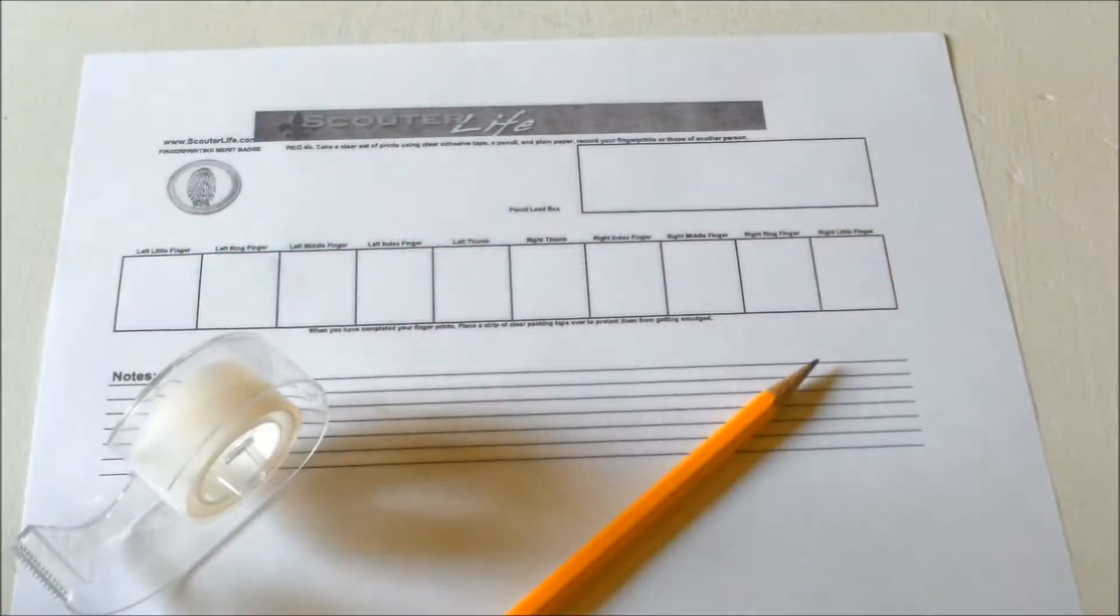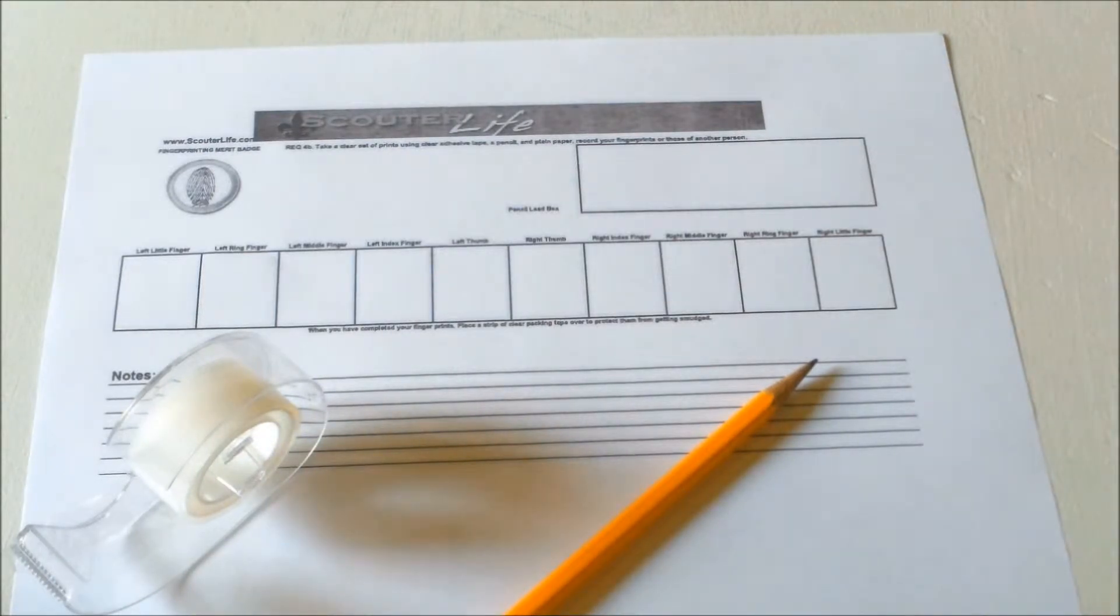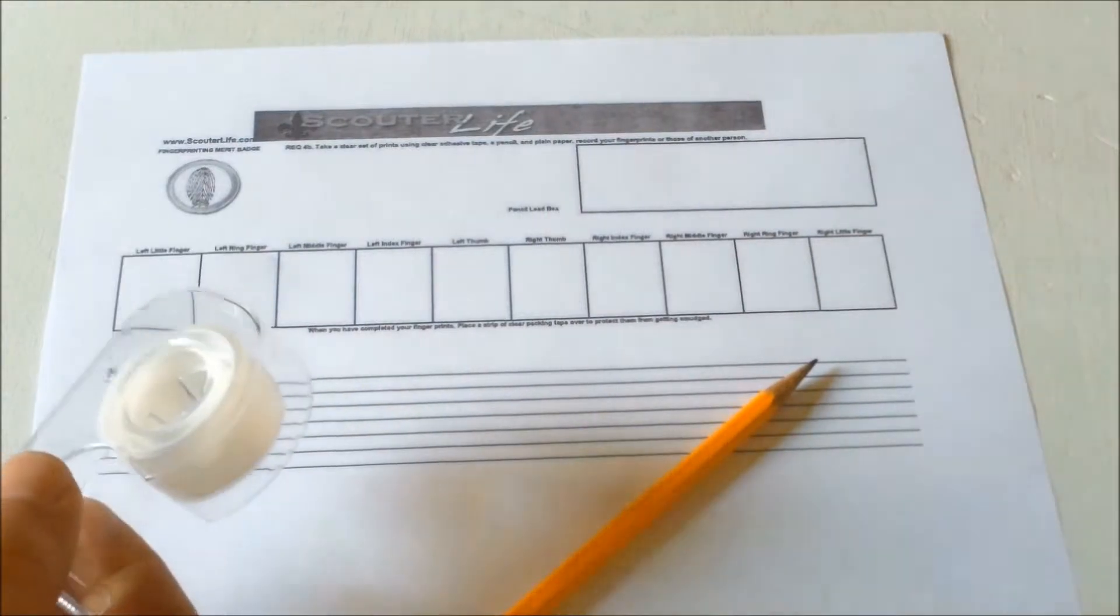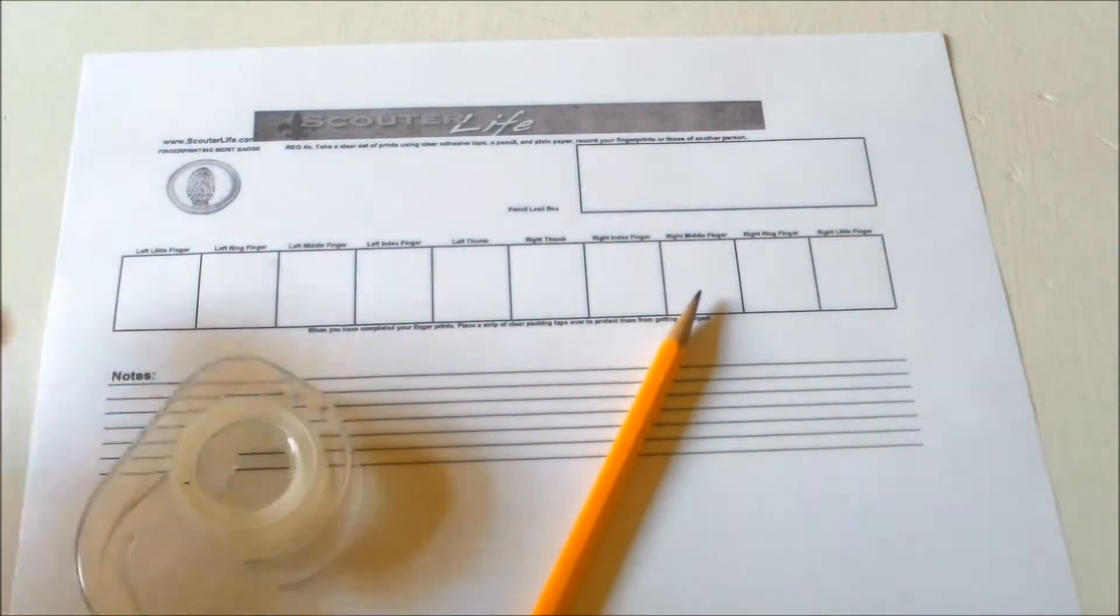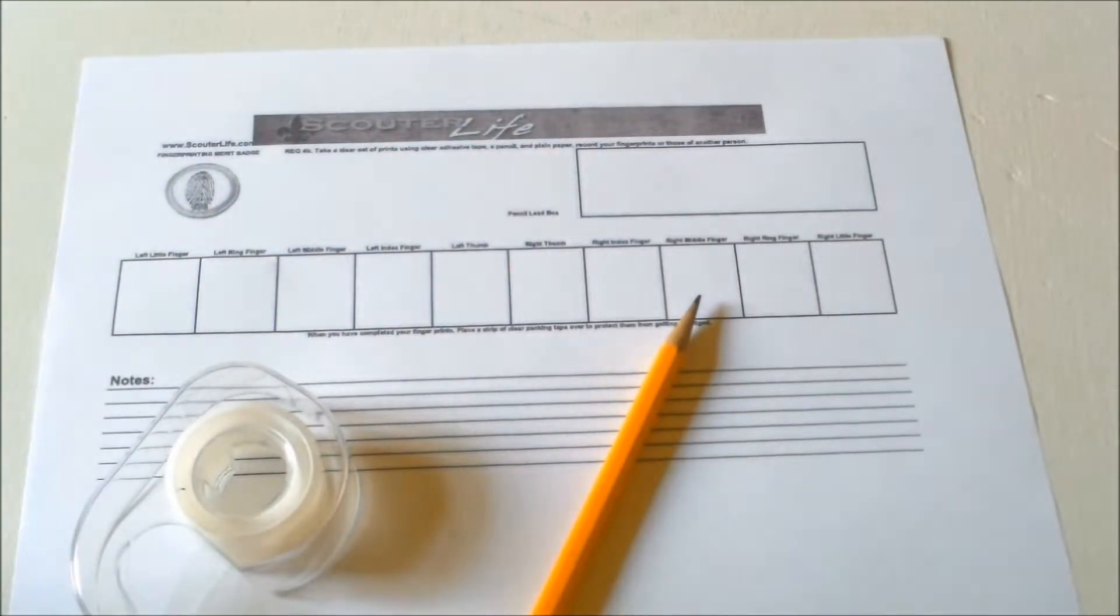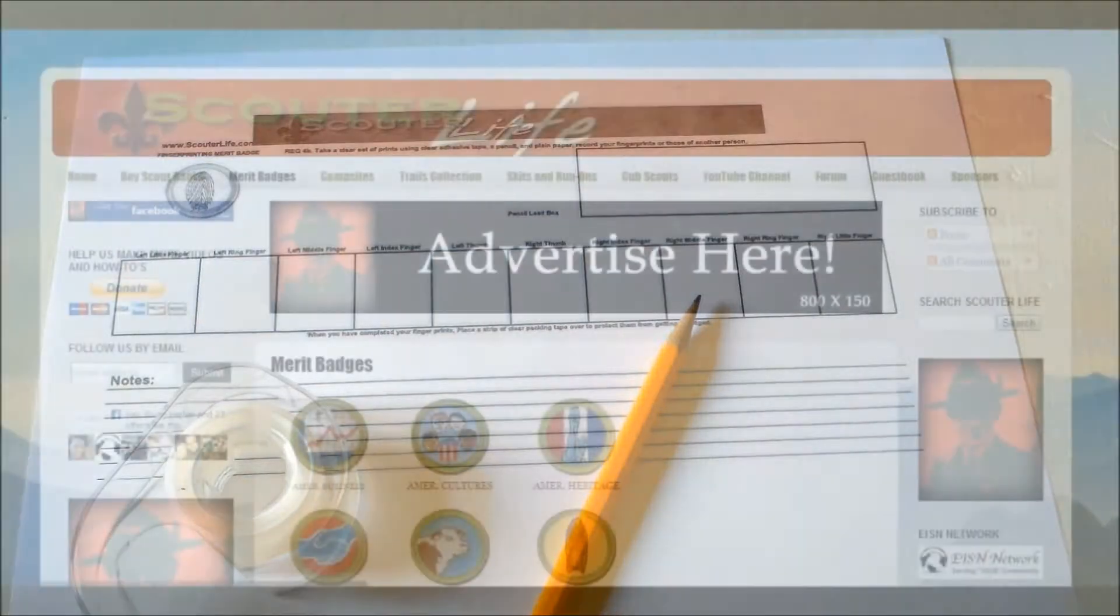We're going to go over requirement 4B of the fingerprinting merit badge, which is take a clear set of prints using clear adhesive tape, a pencil, and plain paper. Record your fingerprints or those of another person.